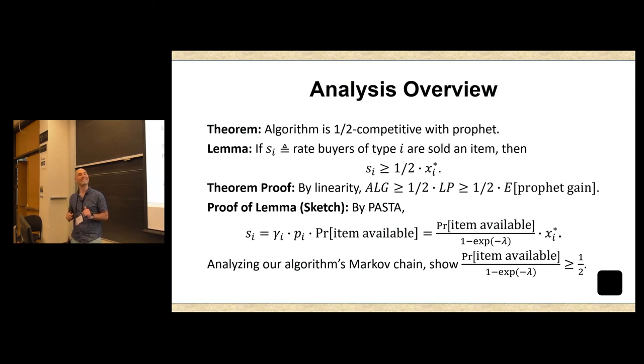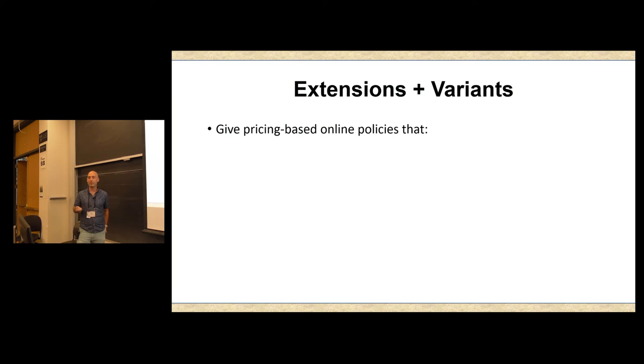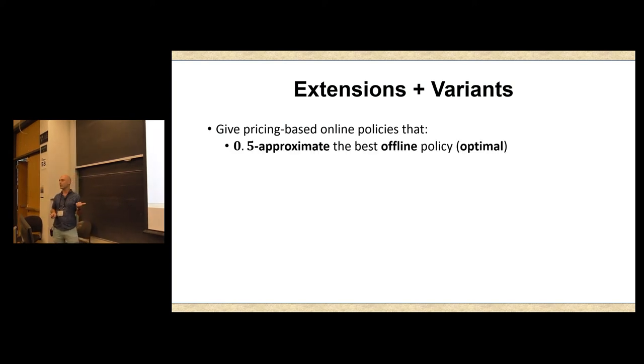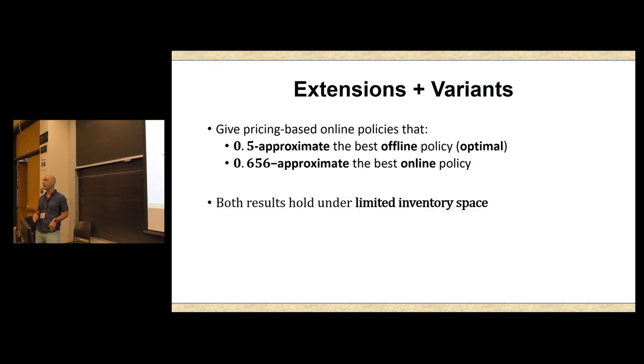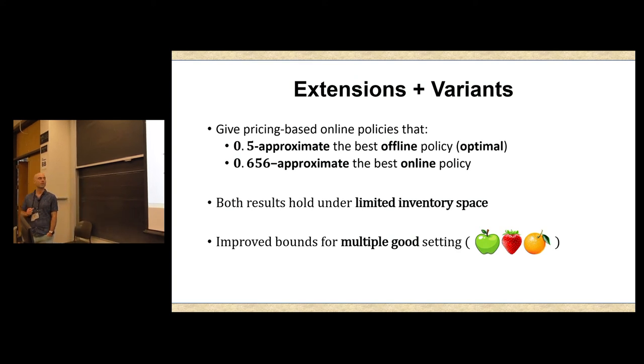So I'll very briefly tell you about some extensions and variants that won't make it into a 15 or 16-minute talk. As I said, we give pricing-based policies that give a one-half approximation of the prophet. And we show that this is optimal. We show how to get a better than one minus one over e approximation of the best online policy, which is not necessarily pricing-based. I'll point out that both of these results hold even under limited inventory space. So this is a little counterintuitive. If you only have a store where you can store, say, five apples, then you're still going to get essentially the same guarantees. Even if you have to throw away items for no reason other than there's just not enough shelf space, you're still going to get the same kind of guarantees. Finally, we got some improved approximation guarantees, though not pricing-based, for the multi-good setting. So now we don't only have apples, we have apples, strawberries, and oranges.